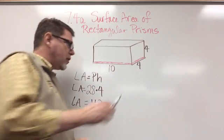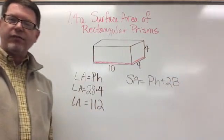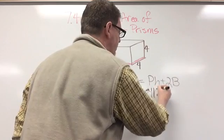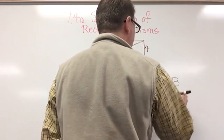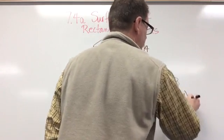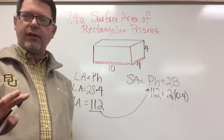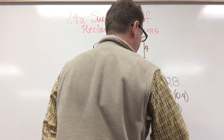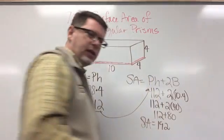Now here's the cool thing about surface area. Surface area equals capital PH plus 2B. Since I already found the lateral area, I can plug in 112 for PH. Now I add 2 times the area of the base, which is 10 times 4, or 40. So we have 112 plus 2 times 40, which is 112 plus 80, and 112 plus 80 is 192. The total surface area equals 192 square inches.